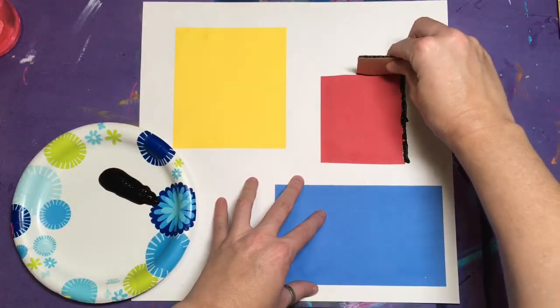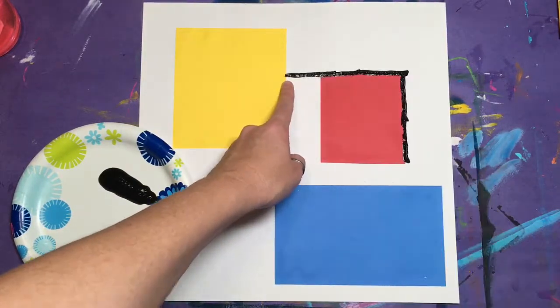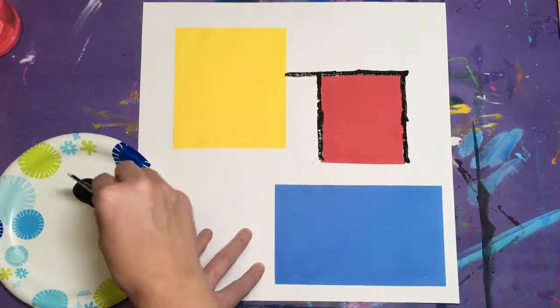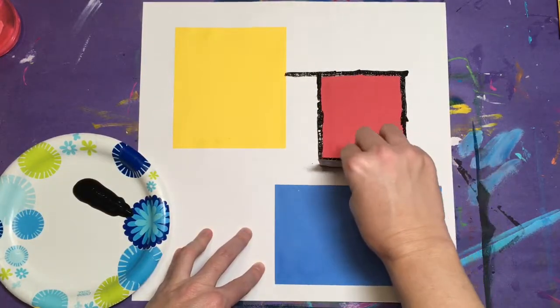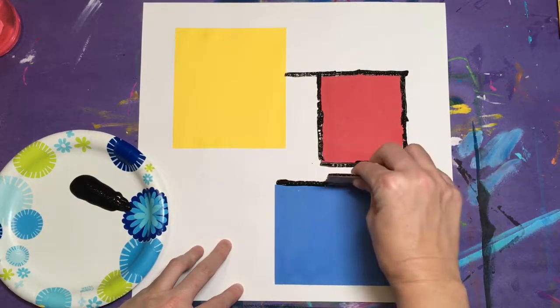You're going to push down and pick it up. Push down and pick it up. You see that I continued my black line until I ran into another shape and then I had to stop. Continue making these black lines around each of your shapes.